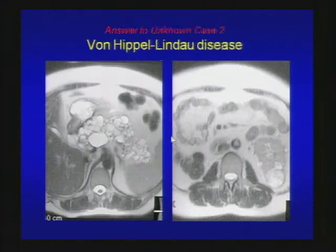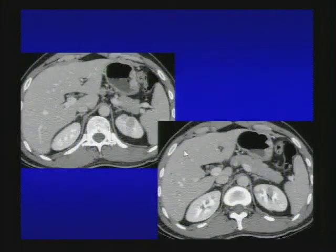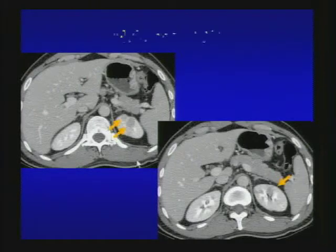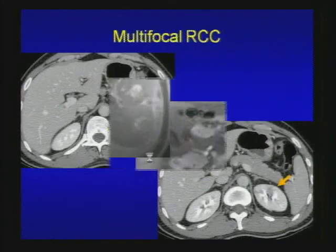Now some practice cases. Multiple solid masses in the left kidney — differentials include multifocal RCC, metastasis, or lymphoma. In this case it turns out to be multifocal RCC.